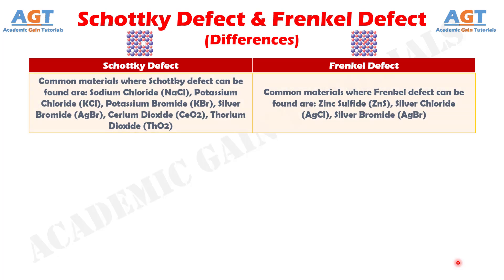Difference number 7: Common materials where Schottky defect can be found are sodium chloride, potassium chloride, potassium bromide, silver bromide, cerium dioxide, and thorium dioxide. Whereas common materials where Frenkel defect can be found are zinc sulfide, silver chloride, and silver bromide.